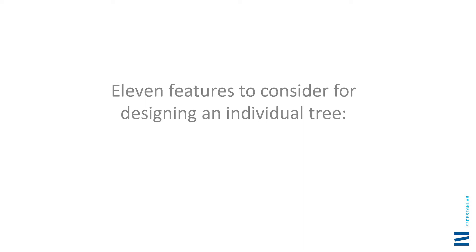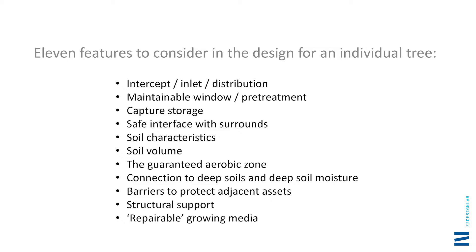That covers the relationship with deep soil moisture. Let's move on to the features to consider for design at the individual tree level. I was going for 10 features but couldn't narrow it — it's 11. A lot of these you're already doing, but it's useful to categorise them as a design checklist. There are many ways to deliver each feature, and sometimes you can deliver two features combined in one.